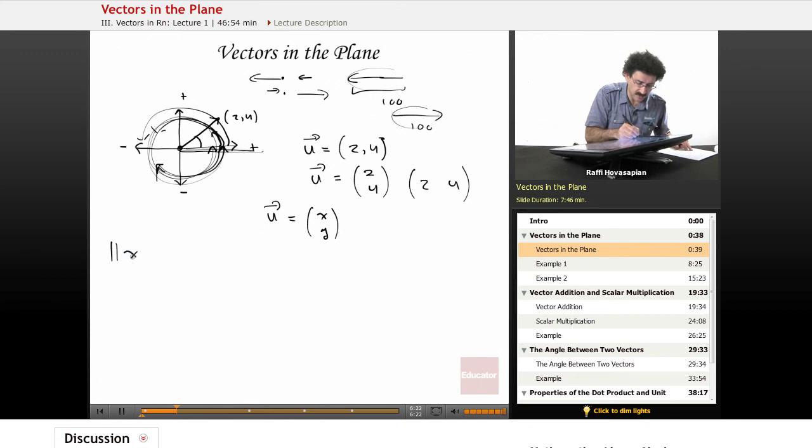So we define the magnitude. The symbol for the magnitude is—excuse me. So u is our vector. We have the symbol for the vector, and we put two double lines around it. That's the magnitude, and that's just the length.